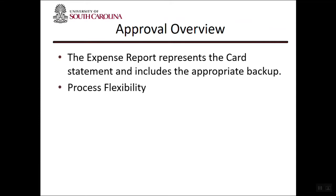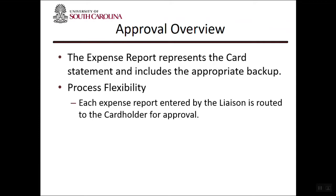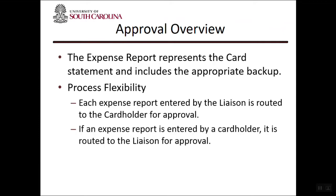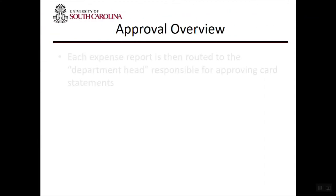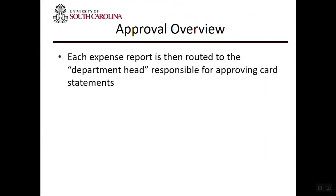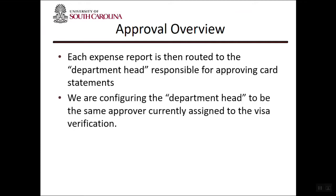The system will be configured with two possible process options for your department. One option is each expense report may be entered by the liaison, and then it will be routed to the cardholder for approval. The other option — your department may want more cardholder involvement in the process. For example, your department may require the cardholder to enter the expense report instead of the liaison. If so, the expense report will route to the liaison for a completeness review approval. Each expense report is then routed to the department head for approval. We are configuring the approver as the same person that is currently approving with the Visa verification process.